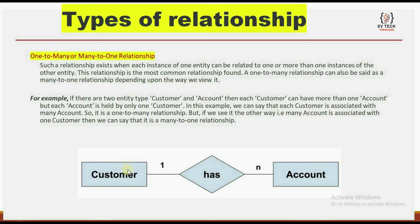For example, we take a customer. A customer can have any number of accounts. If there are two entity types — customer and account — then each customer can have more than one account, but each account is held by only one customer. We can say that each customer is associated with many accounts, so it is a one-to-many relationship. But if we see it the other way, many accounts are associated with one customer, so we can say it is a many-to-one relationship.